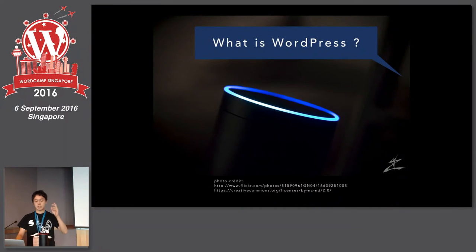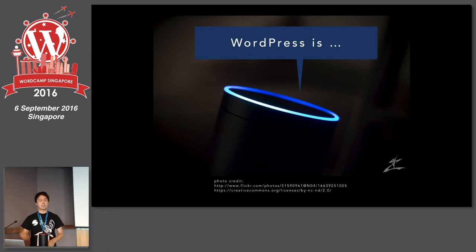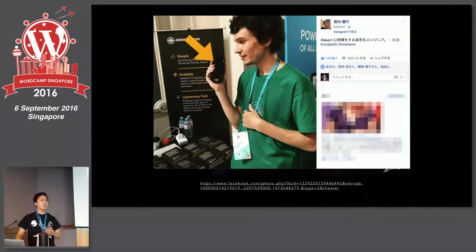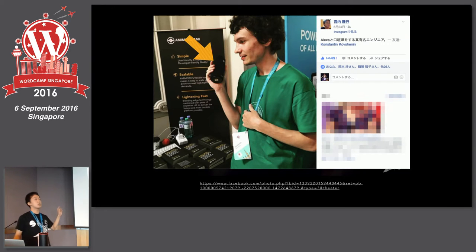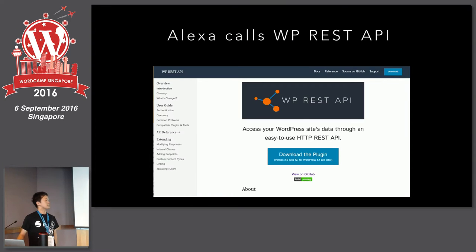We say to AmimotoNinja 'what is WordPress,' and it introduces WordPress. We made this skill because we had sponsors and wanted to automatically introduce our product using a voice interface. We brought it to WordCamp EU, and many people came to our booth and talked with Alexa.